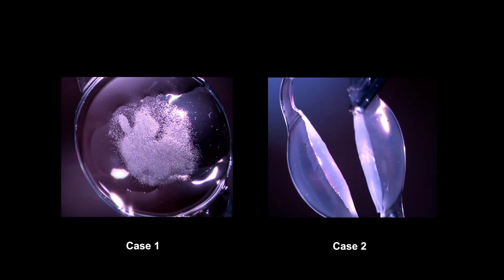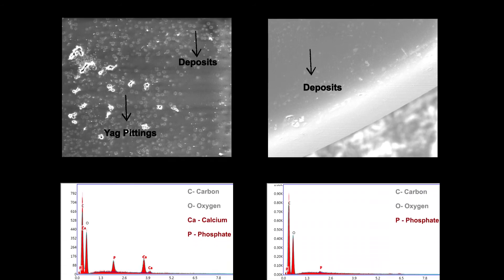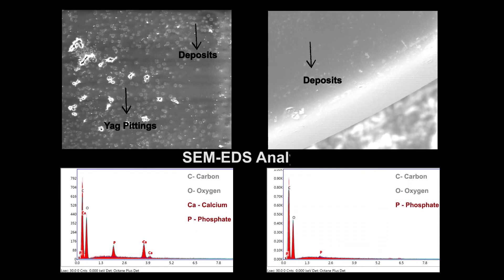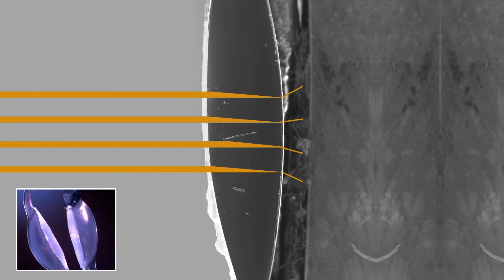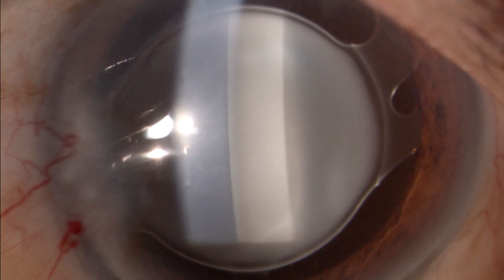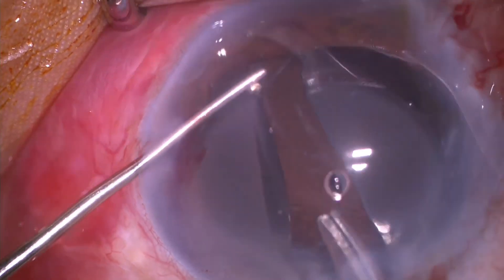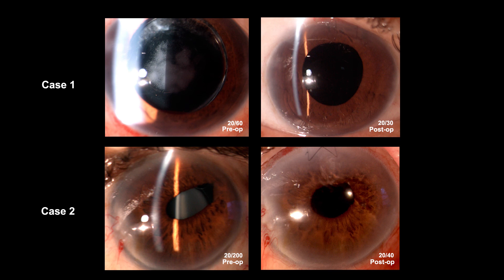The explanted IOLs were then subjected to scanning electron microscopy. It revealed calcium phosphate deposits in case 1 and phosphate deposits in case 2. Von Kossa staining also showed presence of calcium over the IOL. Opaque IOL reduces the amount of light reaching inside the eye and also causes diffraction of light, decreasing visual acuity and contrast sensitivity. Thus, replacement of opaque IOLs results in clear optical media, good visual acuity, better contrast sensitivity, and enhanced patient satisfaction.